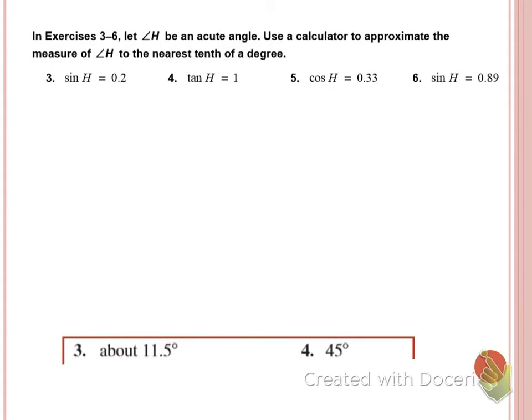Number 5. Cosine of H equals 0.33. So shift cosine of 0.33. 70.7.